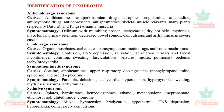Toxidromes are identified: anticholinergic syndrome is caused by antihistamines, anticholinergics, and anti-Parkinson drugs — includes delirium with mumbling speech, tachycardia, dry skin, and mydriasis. Cholinergic syndrome is caused by organophosphates and mushrooms — causes CNS depression, salivation, and lacrimation. Sympathomimetic syndromes are caused by cocaine, amphetamine, and nasal decongestants. Sedative syndromes are caused by opiates, barbiturates, and clonidine, and include miosis, hypotension, and bradycardia.